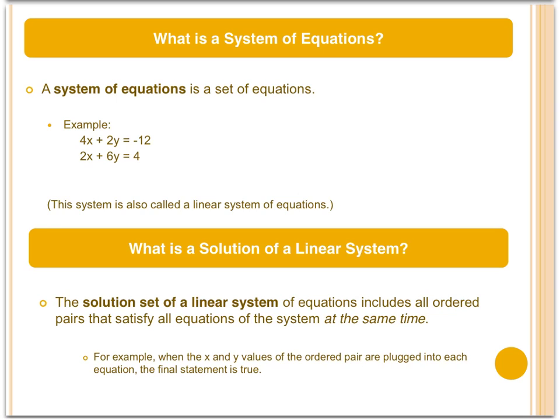A system of equations is a set of equations. For example, we have the two following equations: 4x plus 2y equals negative 12, and 2x plus 6y equals 4. This is a system of equations.